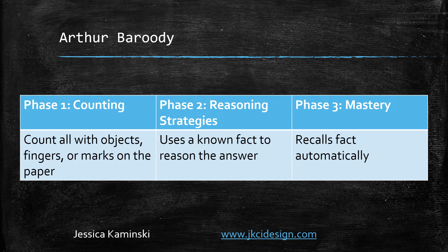This is based off of the work of Arthur Baruti, who found that there are really three phases to understanding math facts. Phase one is counting all the objects with your fingers or marks on paper — the student that counts one, two, three, four and seems to take forever. Phase two is where students use reasoning strategies, using known facts to reason the answer. Phase three is mastery, where students recall facts automatically and quickly. The key insight from his research is that we have to give students opportunities to learn those reasoning strategies and find patterns and relationships — and that's where we often miss that piece, jumping straight from phase one to memorization and skipping phase two.